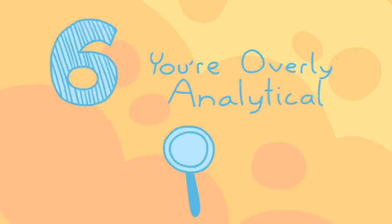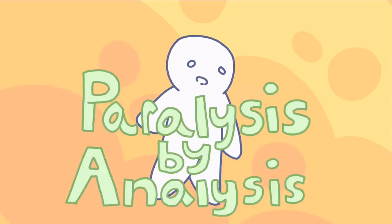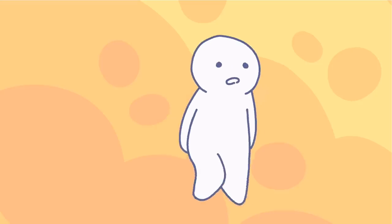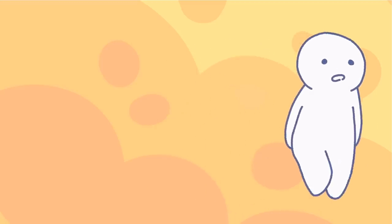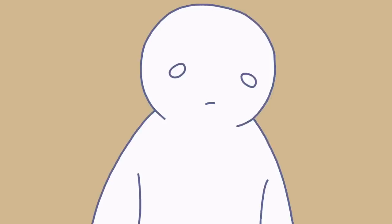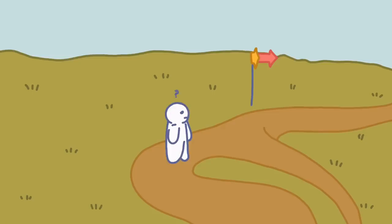6. You're overly analytical. Have you ever heard of paralysis by analysis? Well, this is a common struggle for the highly intelligent person. It happens when you're crippled by always needing to know the correct answer, or the most correct answer, or making the best decision.